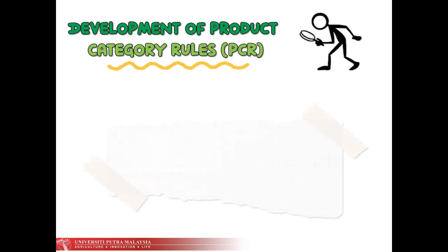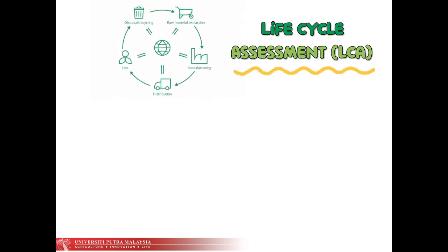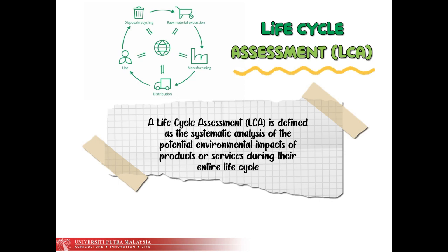The important terms also include development of Product Category Rules that define the product category, describe the scope of the Life Cycle Assessment LCA to be conducted, and identify the types of potential impacts that must be evaluated and reported. The last important term is Life Cycle Assessment LCA, which is defined as the systematic analysis of the potential environmental impacts of products or services during the entire life cycle.